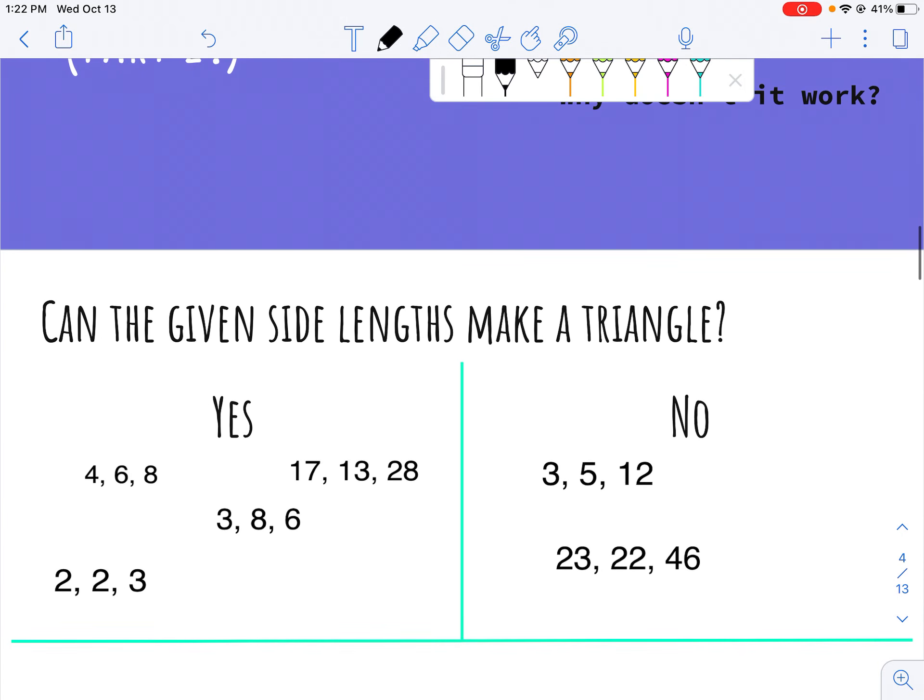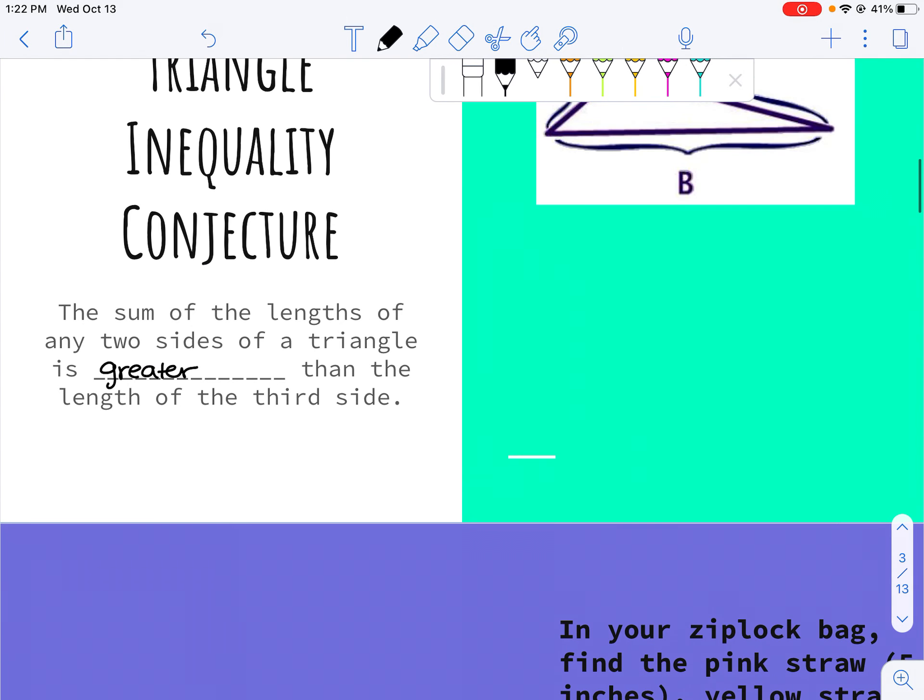We're going to skip this for now. And notice it says greater, not greater than or equal to. So if I have sides 10 and 11 and 21, 21 doesn't work. It'll collapse in on itself and kind of form a line.